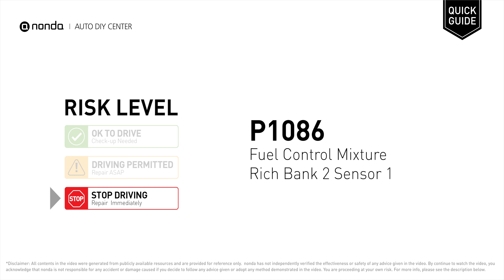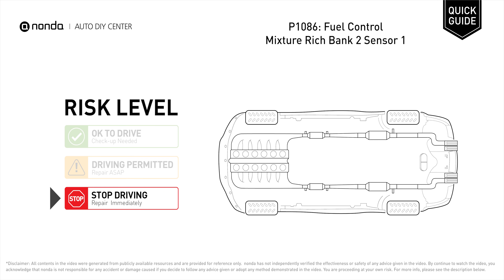P1086 is a diagnostic trouble code for fuel control mixture rich in bank 2 sensor 1. Under this circumstance, stop driving and repair your vehicle immediately. It means that the ECM has detected the fuel control mixture is rich for bank 2 sensor 1.